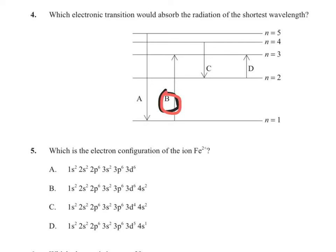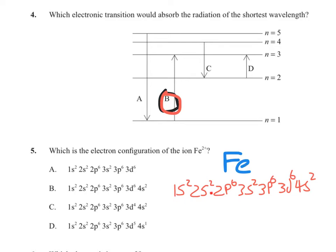Question 5 asks for the electronic configuration of Fe²⁺. The electronic configuration of iron is 1s², 2s², 2p⁶, 3s², 3p⁶, 3d⁶, 4s². When forming Fe²⁺ we remove two electrons. Electrons are removed from the 4s before the 3d because the 4s becomes a higher energy level when the atom is ionised. Removing two electrons from 4s leaves us with 3d⁶, so the answer is A.